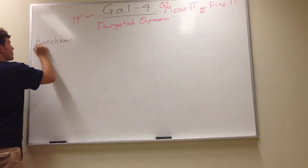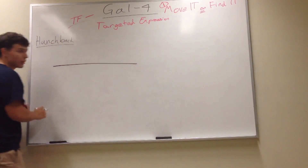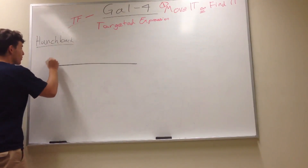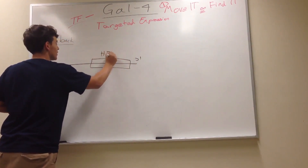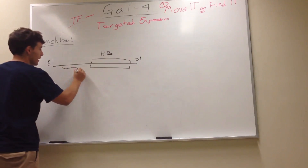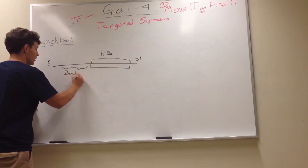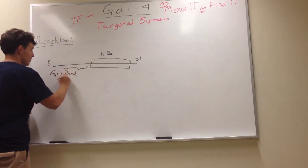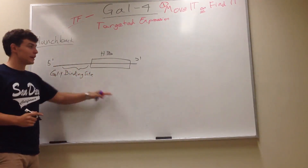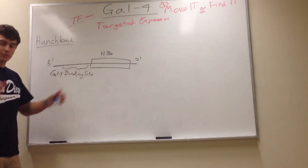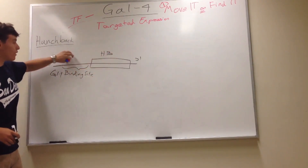Hunchback is the protein we want to express. What we're going to do is take our construct — five prime, three prime — with a coding region for hunchback, and we make sure to put in a region of the coding strand that can bind to GAL4: the GAL4 binding site. So whenever we put it into the fly, or Drosophila, hunchback will be promoted and expressed whenever GAL4 binds to it.